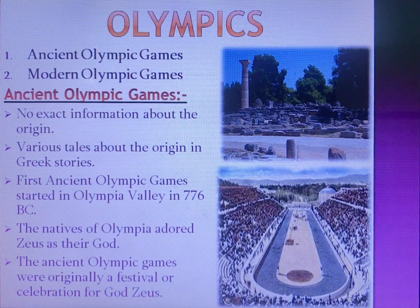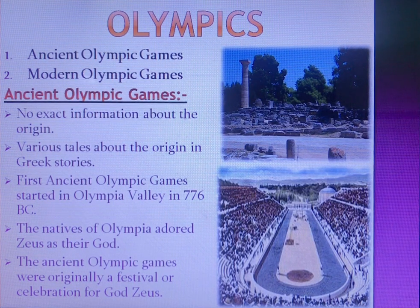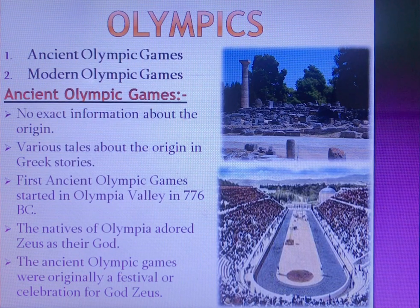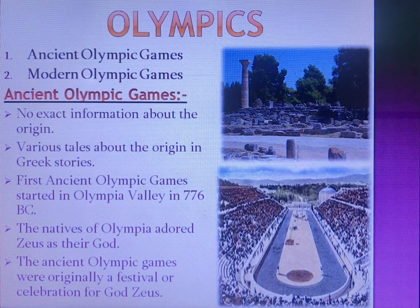There is no exact information about the origin of Ancient Olympics, but there are many tales about the origin in Greek stories. The first Ancient Olympic Games started in Olympia Valley in 776 BC — that means 776 years before Christ.